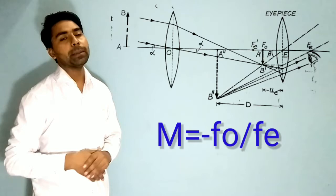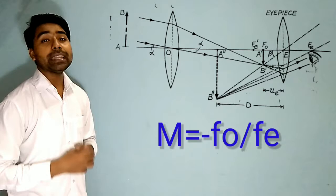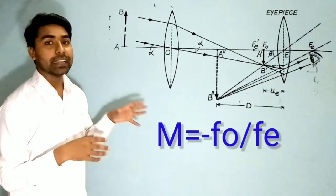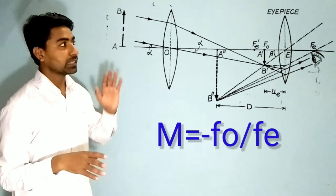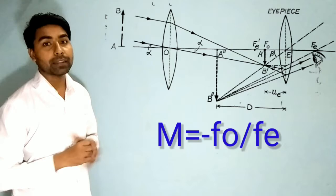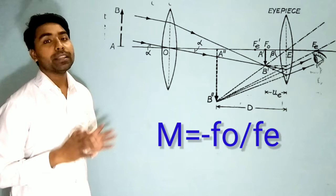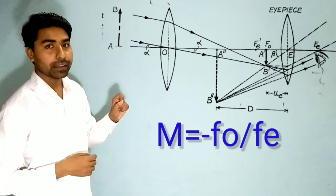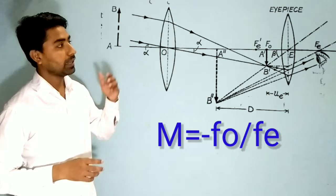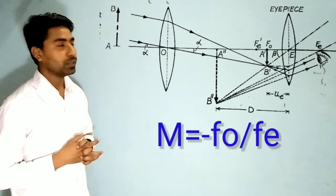The magnifying power is equal to minus fo upon fe. This shows that the magnifying power of this astronomical refracting telescope can be increased. With this equation, M = -fo/fe, we can only change the focal lengths of the lenses. In the denominator, fe must be as small as possible, and in the numerator, fo must be as large as possible.